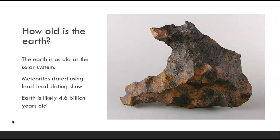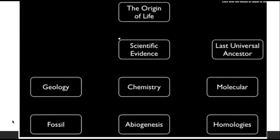Earth is likely 4.6 billion years old, and we get this not just through meteorite dating but through a bunch of other data — much, much more than 20 to 40 million years old. When we talk about the origin of life, we need scientific evidence that comes from geology, chemistry, molecular data, and fossil data — including chemistry talking about how life could come from nothing, and different things called homologies, or how things are related. All of this data needs to come together to talk about the origin of life.